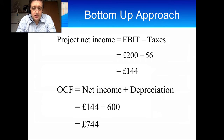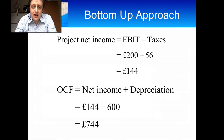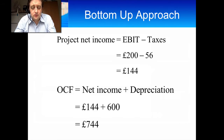The other way is to go from the net income — this is the bottom up approach. It's the earnings before taxes minus the taxes, which gives us the net income of 144 pounds. We then add on any accounting changes; the only one in this example is depreciation. So it's net income plus depreciation, which gives us an operating cash flow of 744 pounds. We call that the bottom up approach.